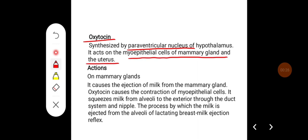Actions of oxytocin on mammary glands: It causes ejection of milk from the mammary gland by causing contraction of myoepithelial cells.